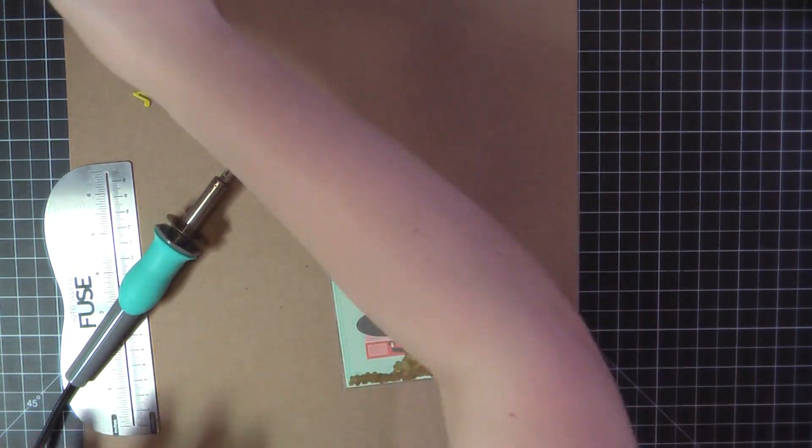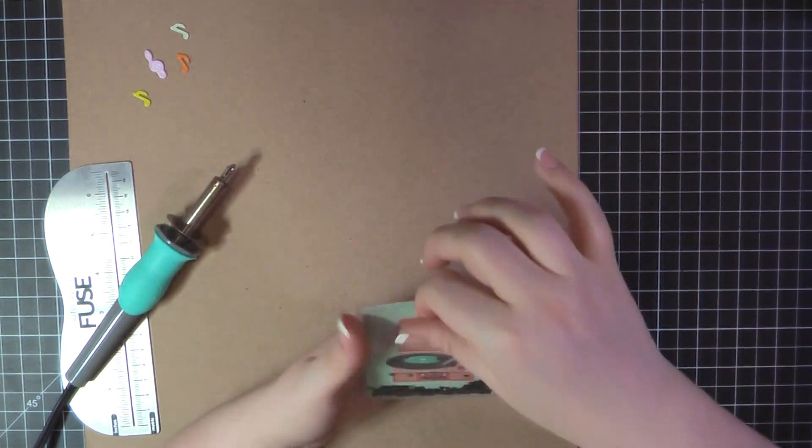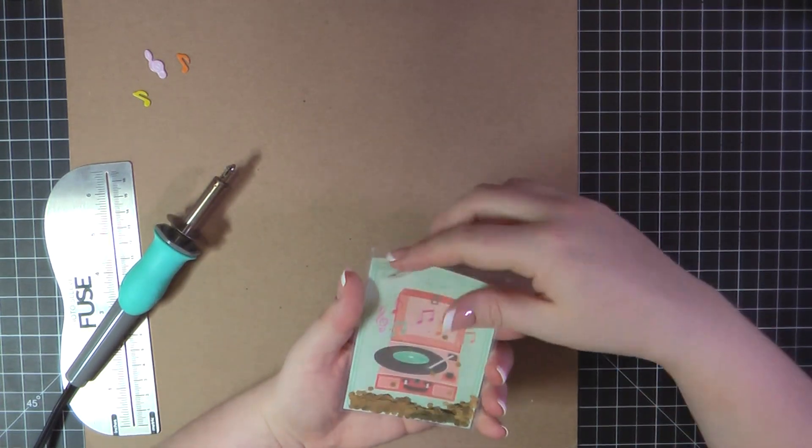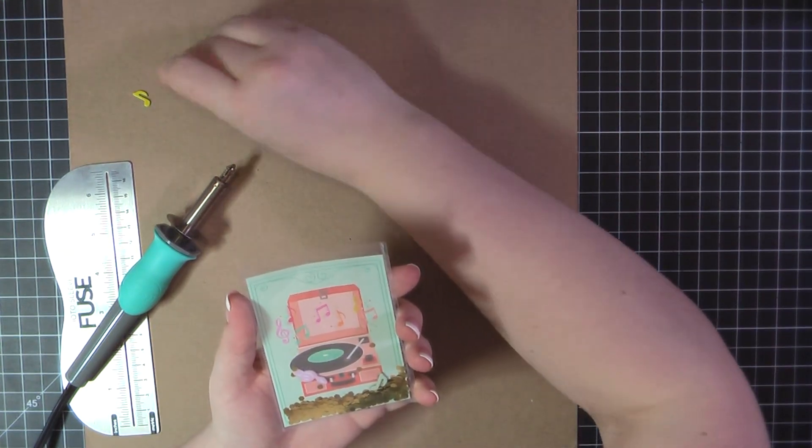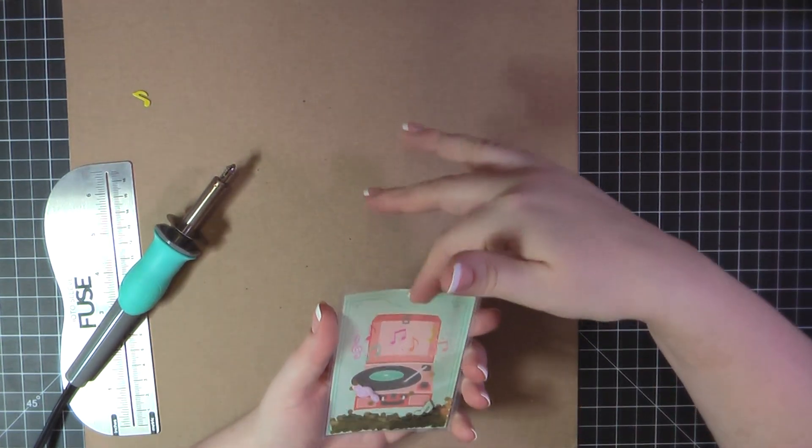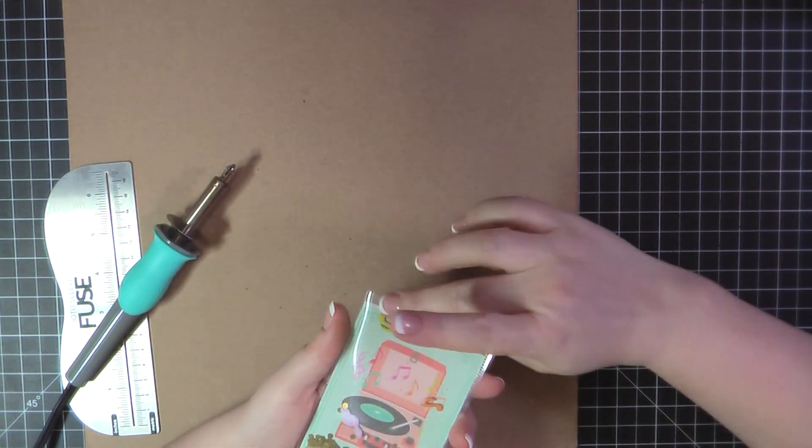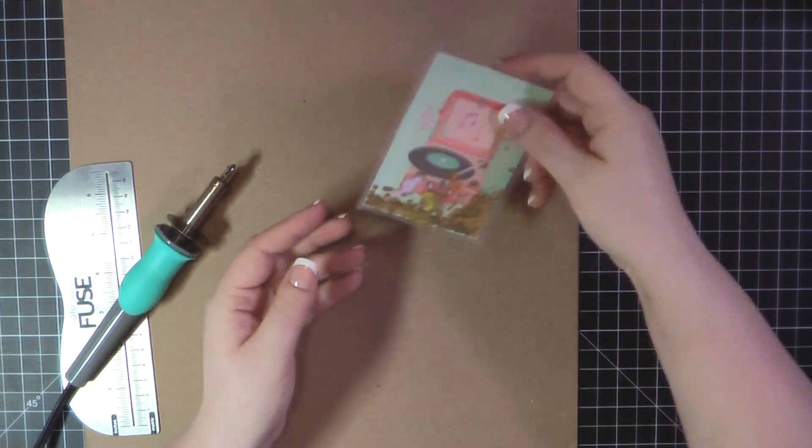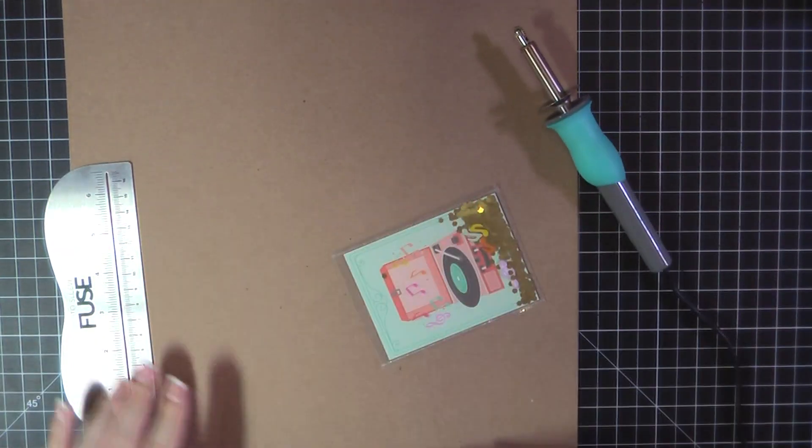So I'm using here a cut-apart pocket from a We Are Memory Keepers album page. I often will buy these at Tuesday morning, and then I don't actually use them for scrapbook albums. I will just trim them apart. That way I don't have to fuse all four sides of my pouches when I'm making them. So for this one, I had all three sides already fused for me, and I've added my sequins.